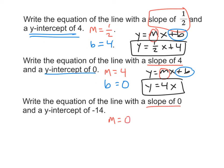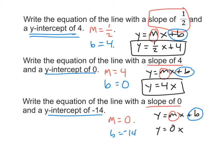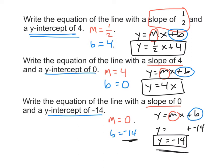In this case, slope is 0 and y-intercept is negative 14. Writing y equals mx plus b again, we get y equals 0x plus negative 14, or minus 14. We know 0 times anything is 0, so that term goes away. Our equation is y equals negative 14. Remember from previous units that y equals negative 14 simply means a horizontal line at negative 14.